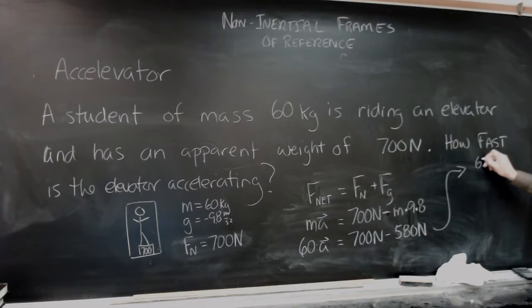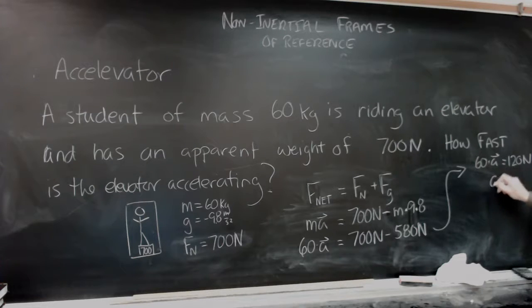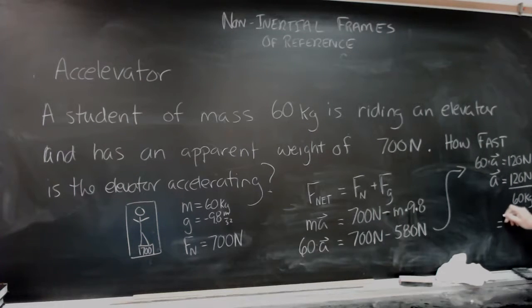That's 60 times the acceleration is equal to 120 newtons. Sometimes you can get that wrong. And so, 120 newtons divided by 60 kilograms is equal to 2 meters per second squared.